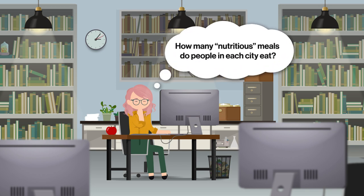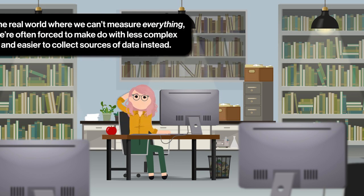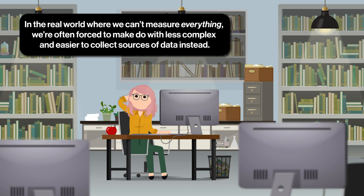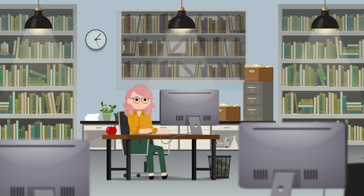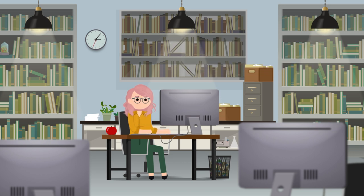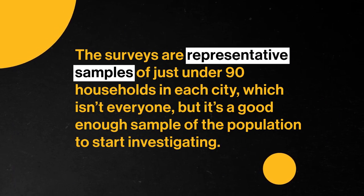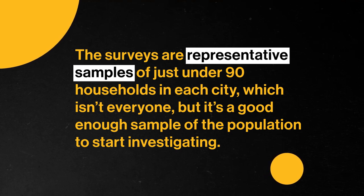As part of her research, she wants to get an idea of the number of meals with fresh fruit or vegetables that people eat a week, which for short we'll just call a nutritious meal. There's a lot more to nutrition, but this definition is simple enough to indicate how healthy people's diets are in general, and it's something we can collect data on. So Ashley opens a spreadsheet and pulls in data her colleagues in both cities collected from household surveys. The surveys are representative samples of just under 90 households in each city — not everyone, but a good enough sample to start investigating.